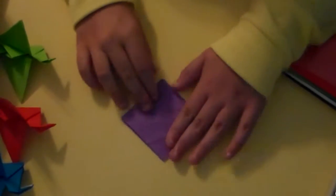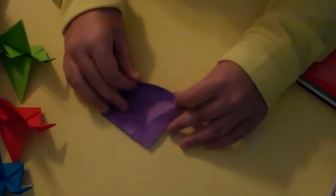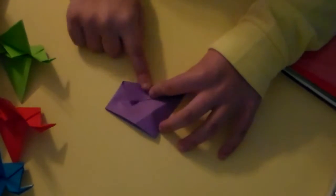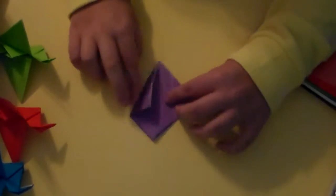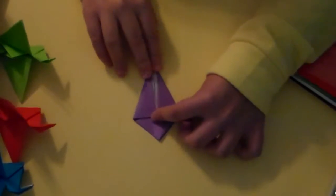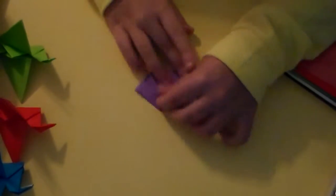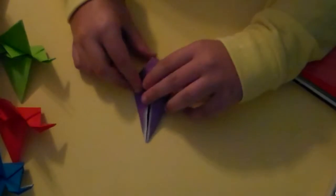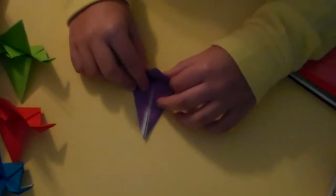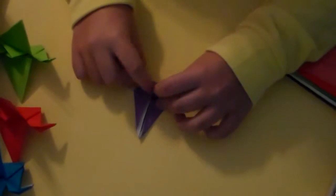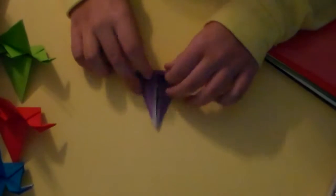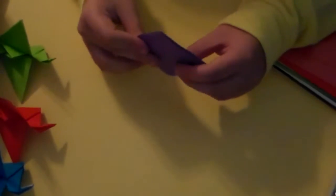And you want to turn it over. And you want to do the same thing against the same lines you just folded. And it doesn't have to be perfect. Don't worry about that. I'm a perfectionist, so I try to make it perfect. But then you fold this down. You want to crease it like that.